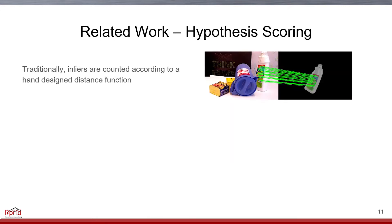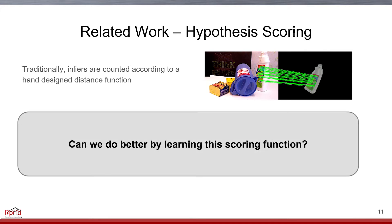Traditionally, counting in-layers is the standard method to solve this problem. Features that are consistent with the estimated pose are counted, but hand-crafted metrics cannot handle well when occlusions and clutters are involved. So can we do better by learning this scoring function? We will show that our method can better do this from data, while still maintaining the generalization ability to unseen objects.